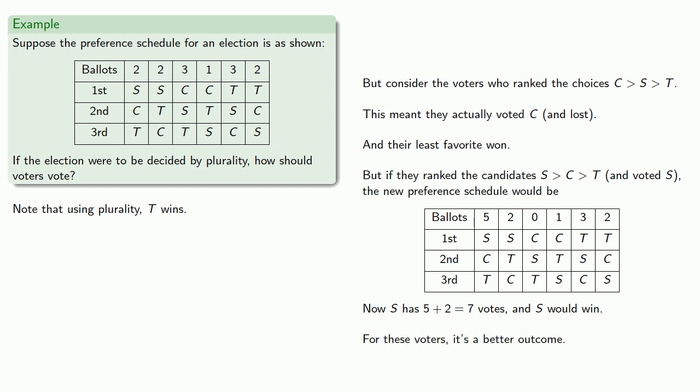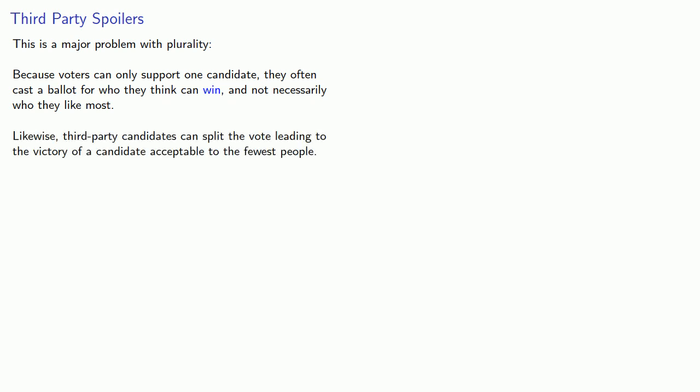For these voters, it's a better outcome. So if the three voters who really preferred C over S over T submitted an insincere ballot ranking S over C over T, the outcome, S wins, is better for them. Now, this is actually a major problem with plurality. And it's a very well-known problem. Because voters can only support one candidate, they often cast a ballot for who they think can win, and not necessarily who they like most. Likewise, third party candidates can split the vote, leading to the victory of a candidate acceptable to the fewest people.